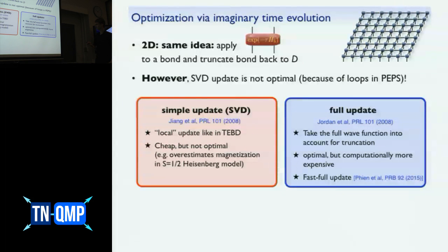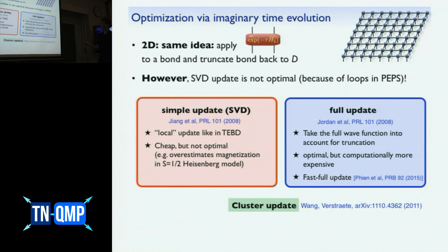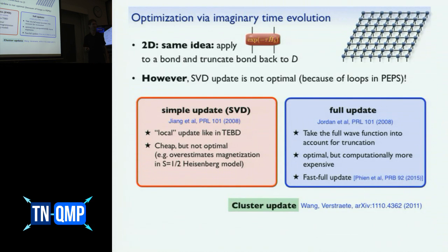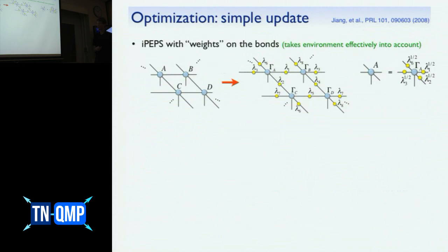There are also improvements on the full update, such as the fast full update, which recycles as much as possible from the previous step rather than contracting the network from scratch. There is also an intermediate approach: cluster updates, where you don't contract the entire 2D wave function but consider only a small cluster in your system.